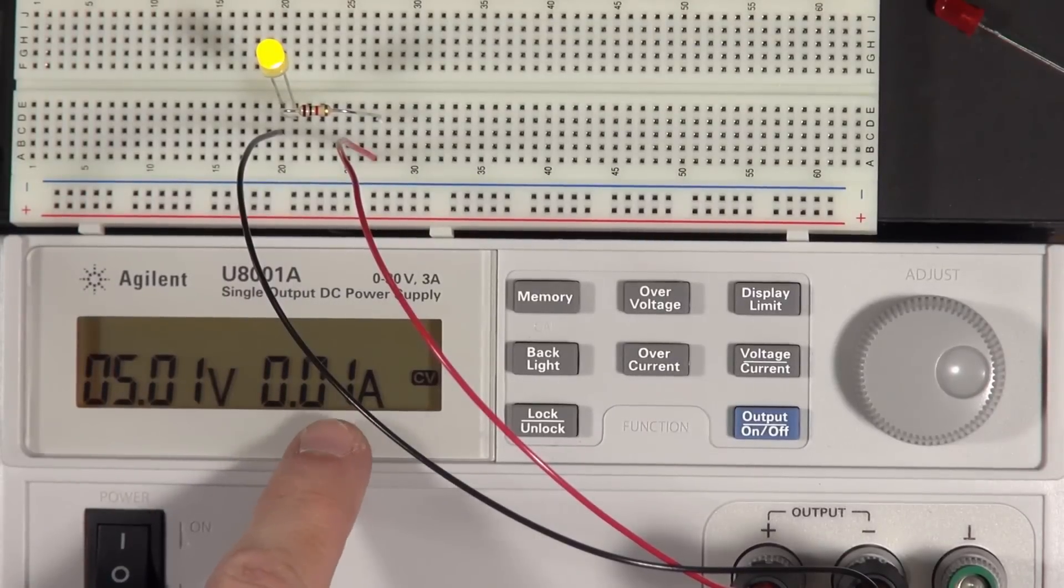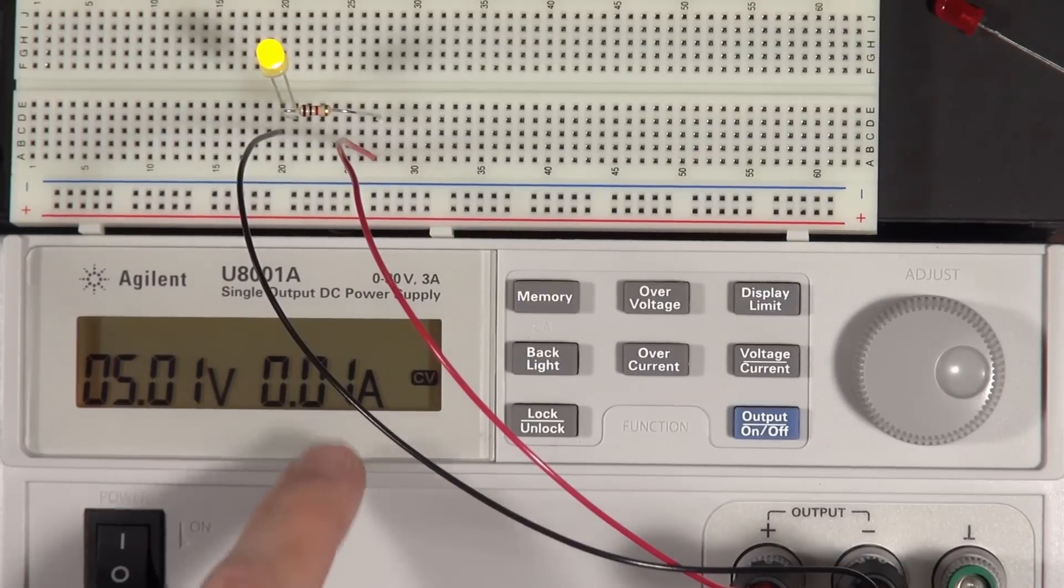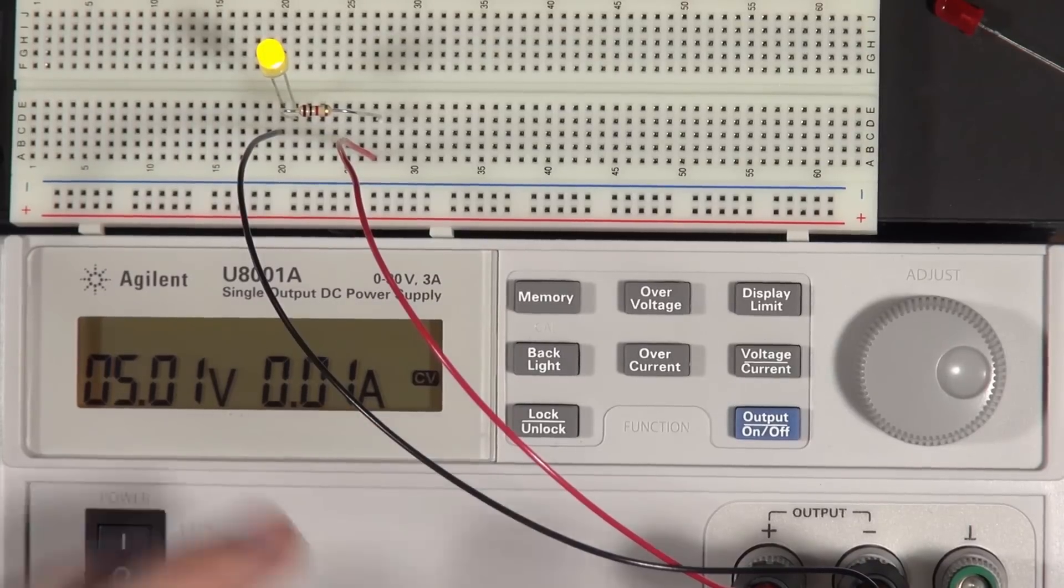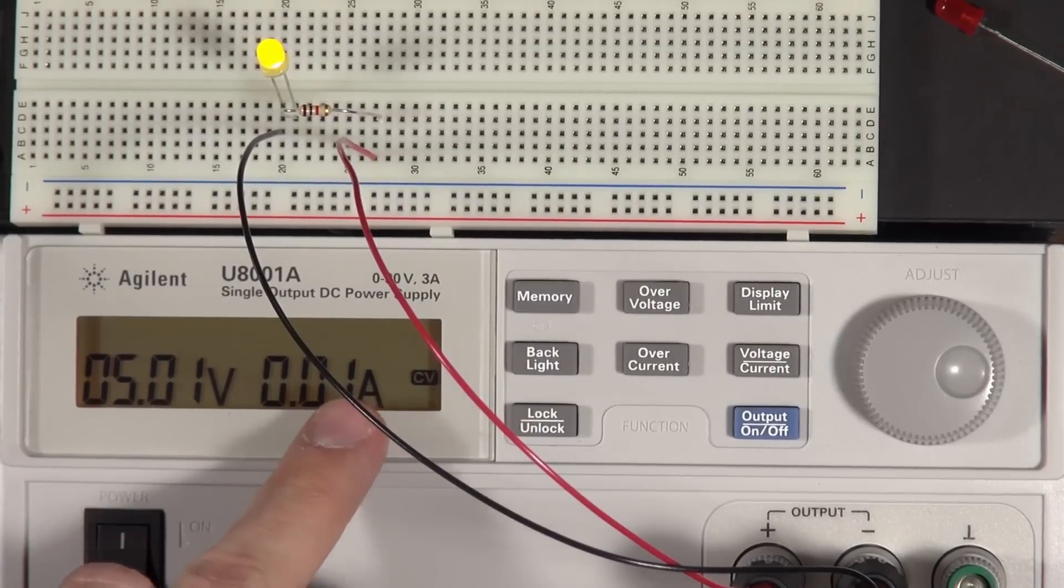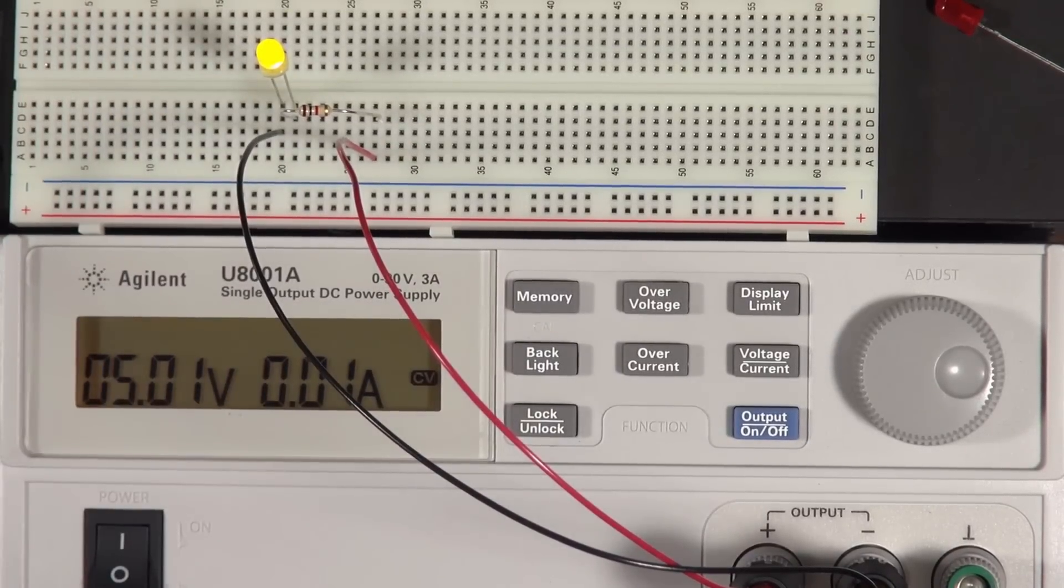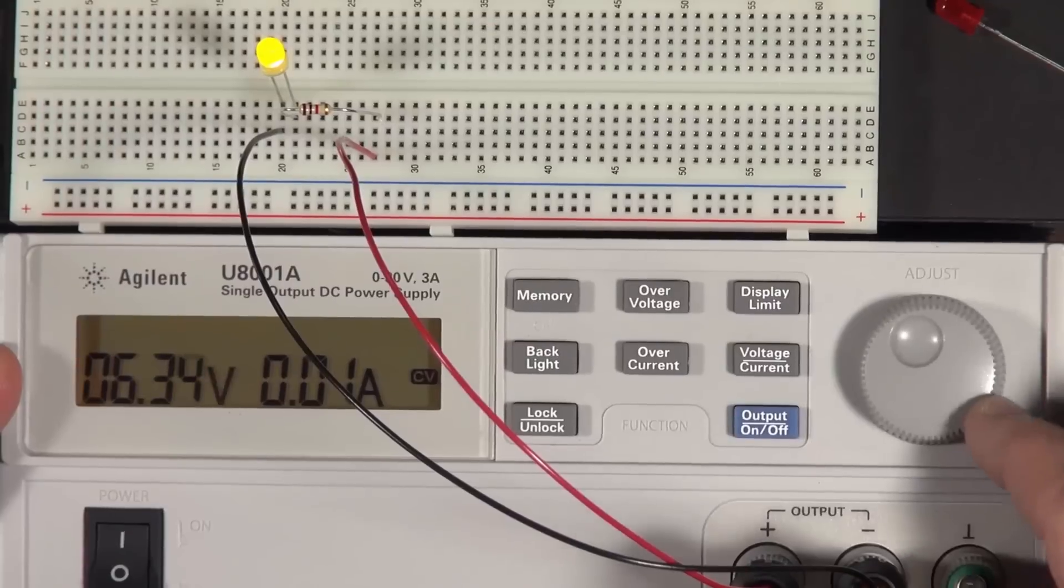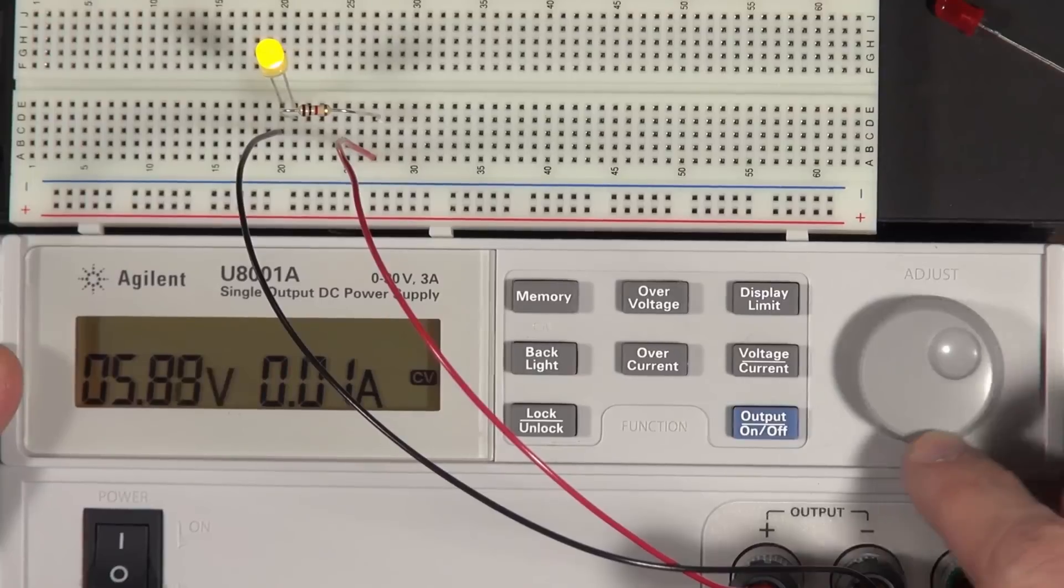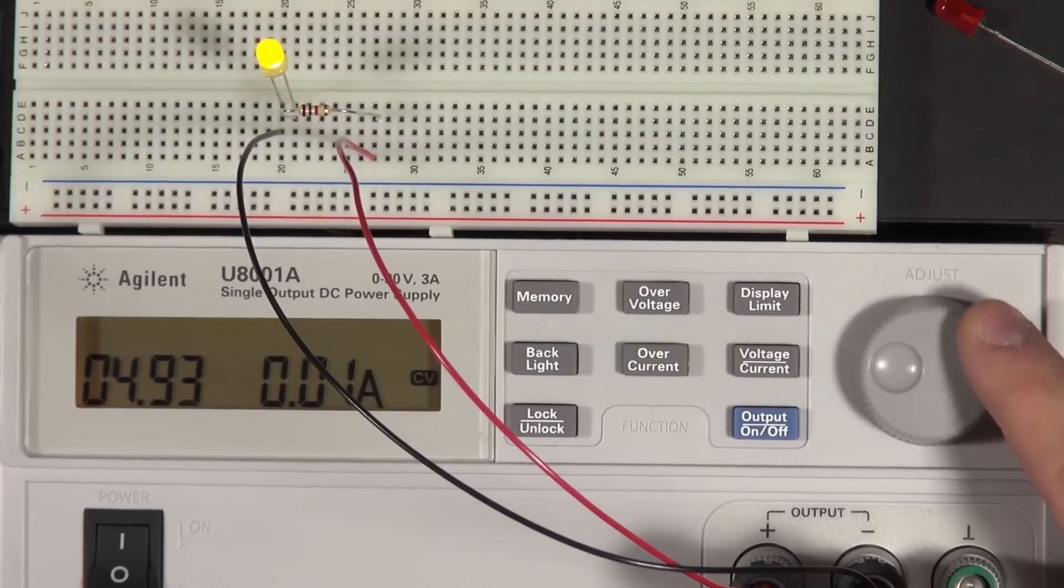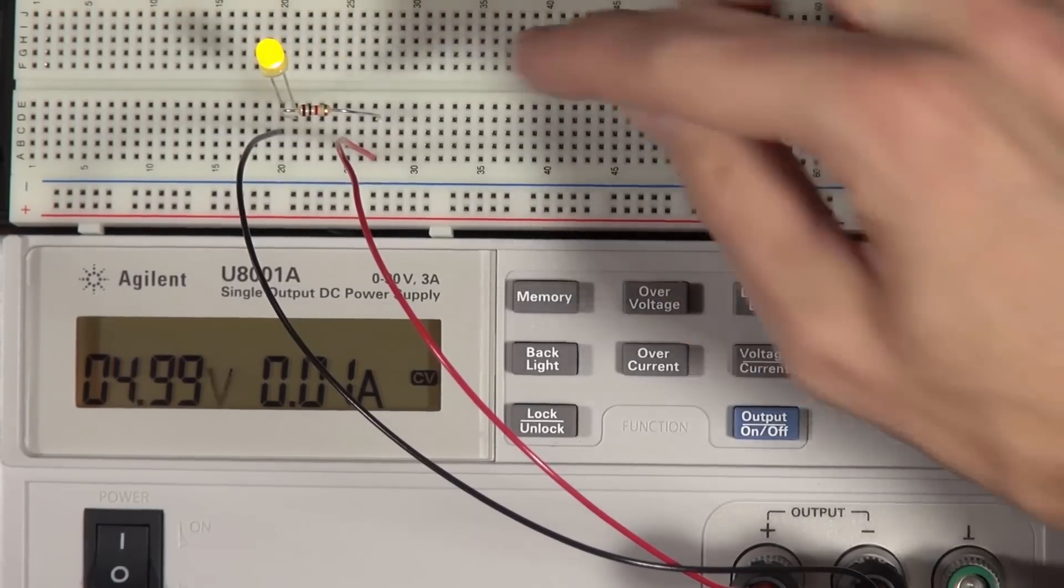But you also see the current is a little bit less, and this isn't the greatest ammeter because it only gives me hundredths of an amp. But before it was 20 milliamps, now it's showing 10 milliamps. It's hard to say exactly what the difference is because it only gives me this much precision. But it is drawing less current. The LED seems to be maybe slightly less bright, but certainly bright enough. And again, I can change the voltage here pretty significantly without any danger of damaging the LED.